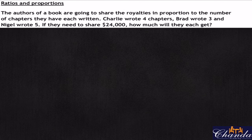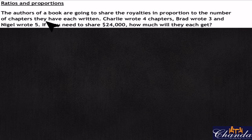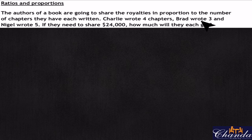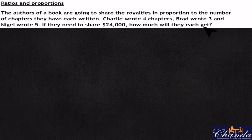The authors of a book are going to share the royalties in proportion to the number of chapters they have each written. Charlie wrote four chapters, Brad wrote three, and Nigel wrote five. If they need to share $24,000, how much will they each get?